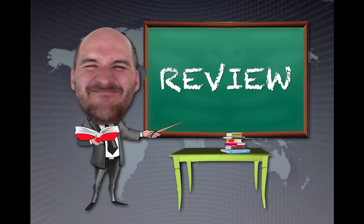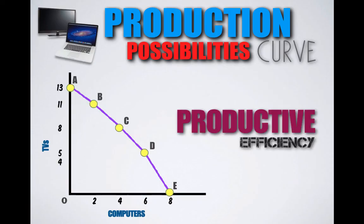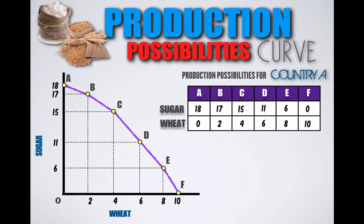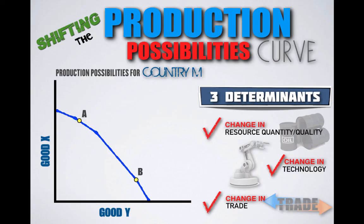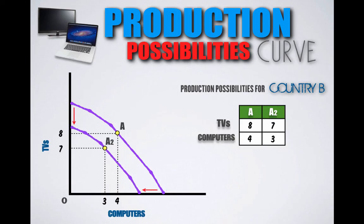It's time for a quick review of today's major points. A production possibilities curve is a visual representation of all the combinations of goods and services that a country can produce given its resources. Production possibility points on the PPC represent productive efficiency. Points inside the PPC represent productive inefficiency. Points outside the PPC represent room for future growth, because those points currently cannot be attained with a given amount of resources. An outward bowing PPC represents increasing opportunity cost. A straight negatively sloped PPC represents constant opportunity cost. A PPC will only shift with a change in resource quantity or quality, a change in technology, or a change in trade. An outward shift represents economic growth; an inward shift represents economic contraction, meaning the country cannot produce as much as it used to, even at full capacity.